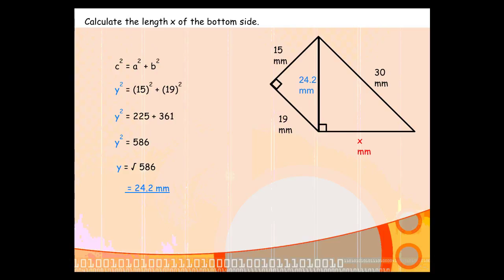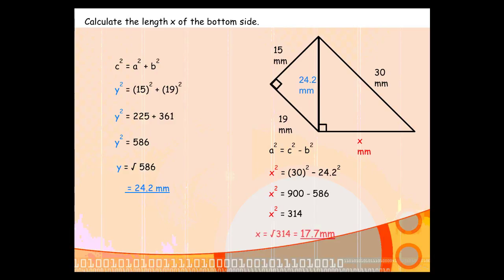Now we have sufficient information to answer the question. We have a right-angled triangle where we know two of the sides: the hypotenuse and one of the shorter sides. We're looking for a shorter side — S for shorter side, S for subtract. So we do 30 squared minus 24.2 squared to find X squared, which gives us 314. Square rooting that gives us an answer of 17.7 millimeters.